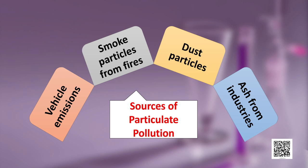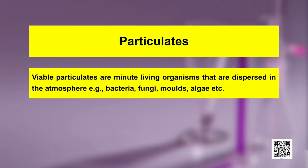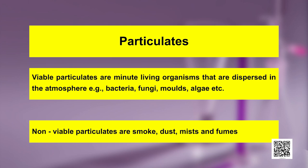Let us now move on to particulate pollutants, which are minute solid particles or liquid droplets in air. Sources include vehicle emissions, smoke particles from fires, dust particles and ashes from industries. Particulates in the atmosphere may be viable or non-viable. Viable particulates are bacteria, fungi, moulds, algae, etc. — minute living organisms dispersed in the atmosphere. Human beings are allergic to some of the fungi found in air, and they can also cause plant disease. Non-viable particulates are smoke, dust, mist and fumes.